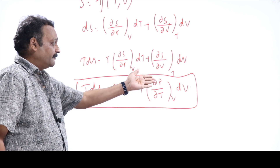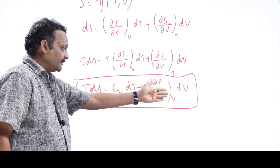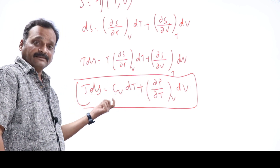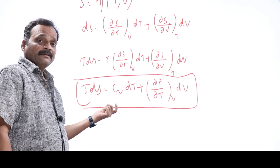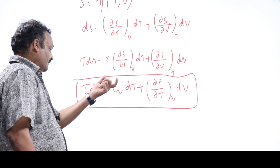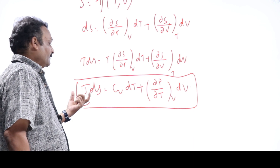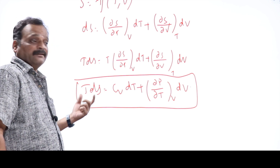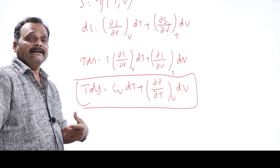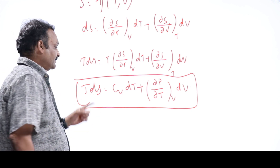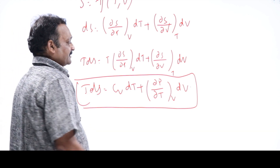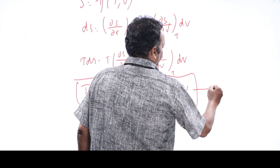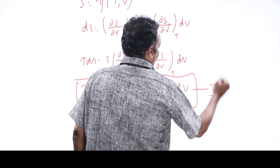If you know the variation of pressure with temperature at constant volume, and if you know the specific heat of the system, you can estimate the heat content — heat transferred, given, or taken. This is known as the first TDS equation: TdS = Cv·dT + (∂P/∂T)ᵥ dV.